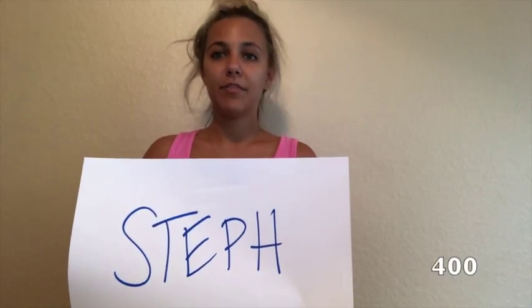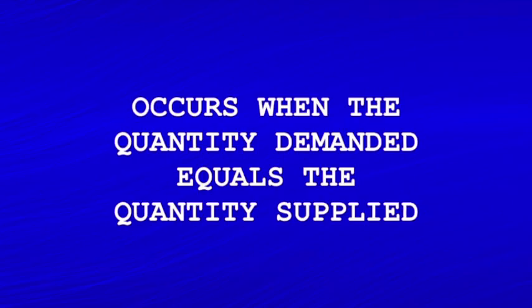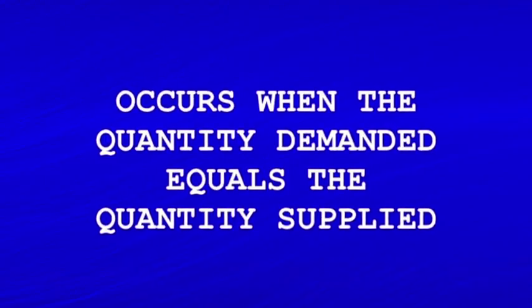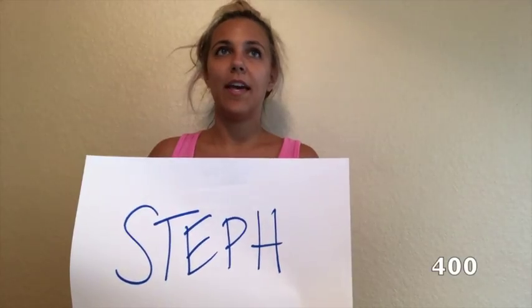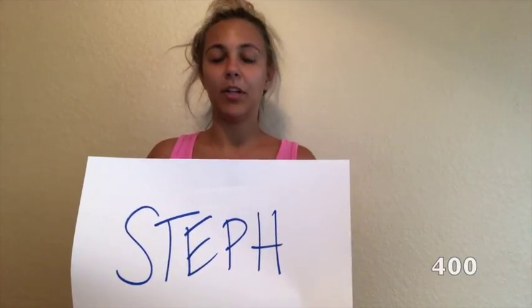Miscellaneous for 400. Occurs when the quantity demanded equals the quantity supplied. What is a market equilibrium? That is correct. Christian, you're up.